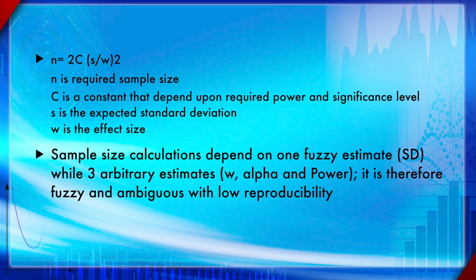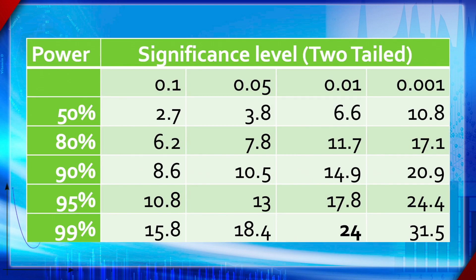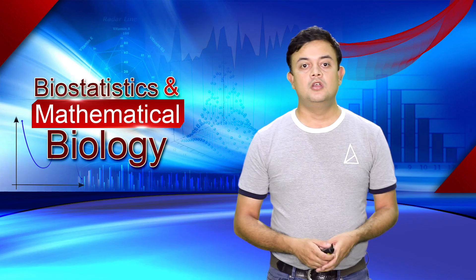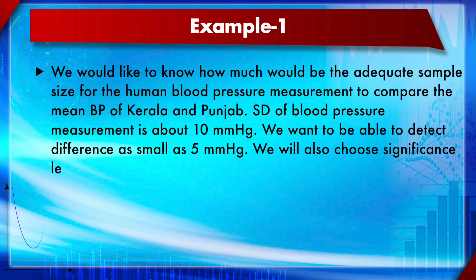Here is a handy table to look up the value of c, the multiplier or constant. The significance level is shown across different columns while the power is shown across rows. We usually go with the constant 7.8, because 80% power and 0.05 significance level are commonly used. However, the significance level you choose depends on the relative consequences of type 1 error (false positive) or type 2 error (false negative).